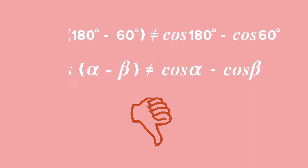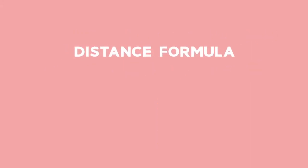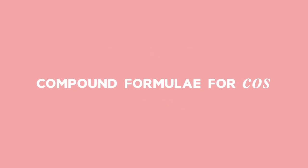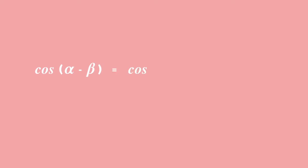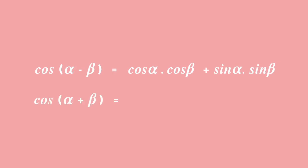We can prove using the distance formula and the cosine rule the following compound angle formulae for cos. Cos of (alpha minus beta) is equal to cos alpha times cos beta plus sin alpha times sin beta. And cos of (alpha plus beta) is equal to cos alpha times cos beta minus sin alpha times sin beta.